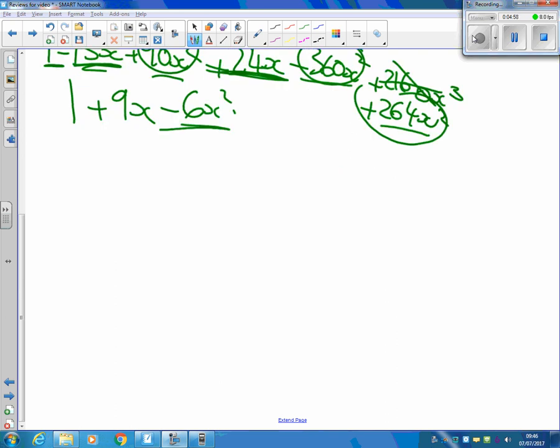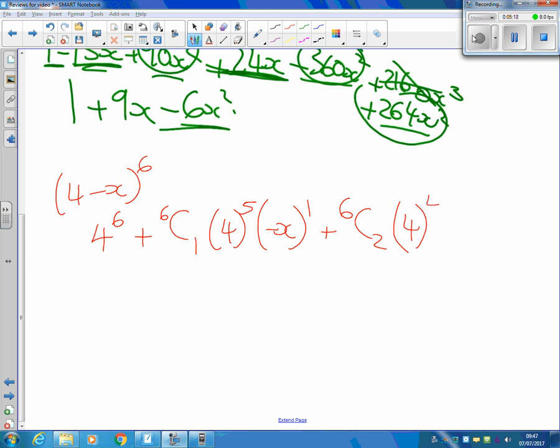And part c asked us to do (4 - x) all to the power of 6. And so we're doing 4 to the power of 6 plus 6 choose 1. I've then got 4 to the power of 5 minus x to the power of 1. And then 6 choose 2.